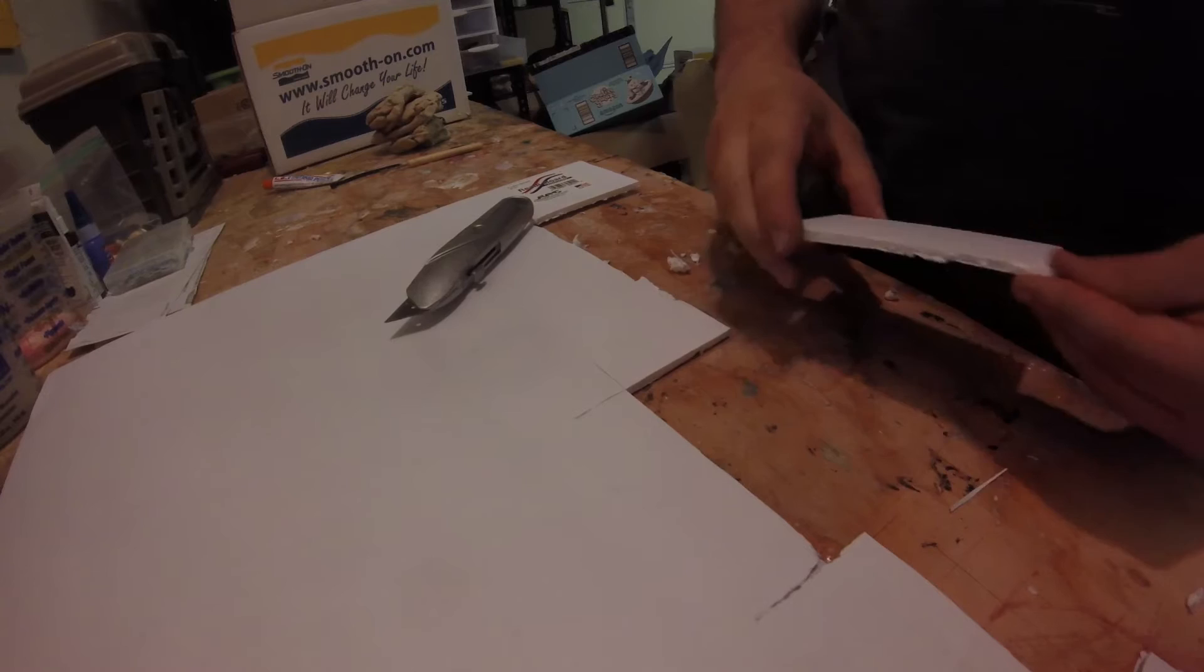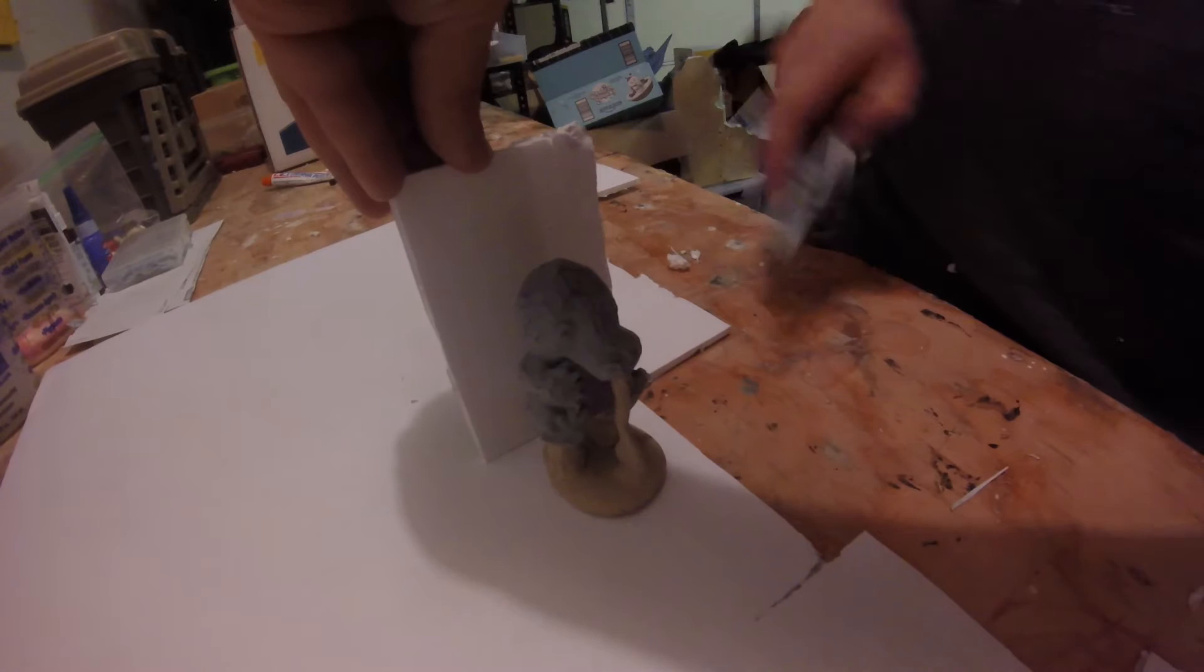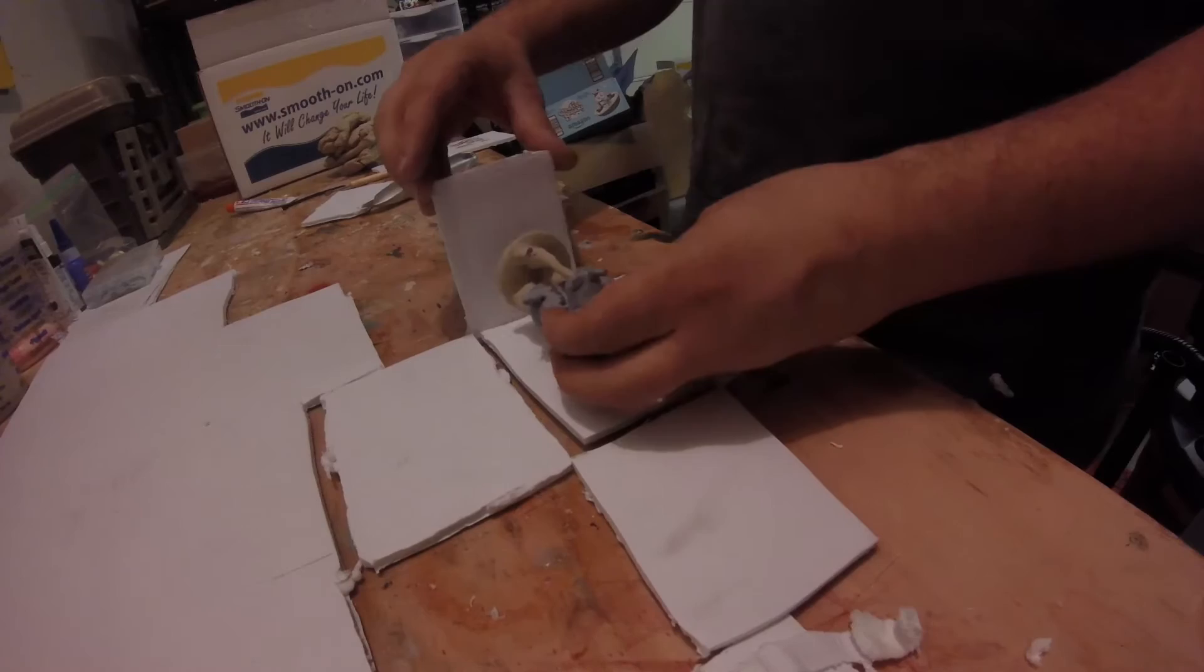Next, I create a mold box out of foam. It's not a very precise process, I just eyeball it and build out a quick box. I glue gun the whole thing together so that it's watertight.